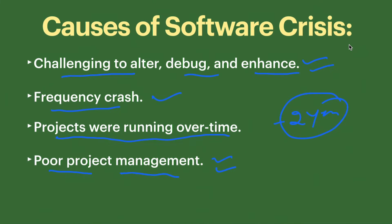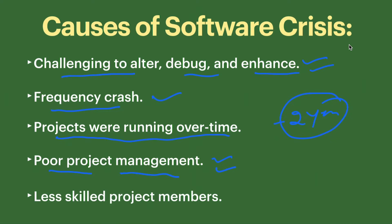Poor project management is another cause of software crisis — if the management is not good and does not understand the actual problem and actual requirements of the customer. Another reason is less skilled project members. If the members involved in the project are not skilled, that is another cause of software crisis.